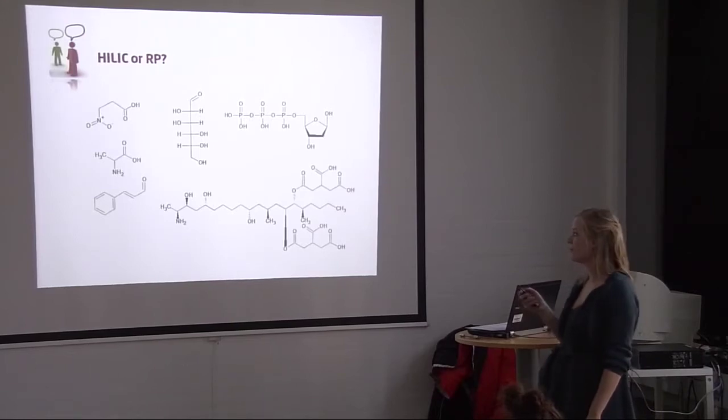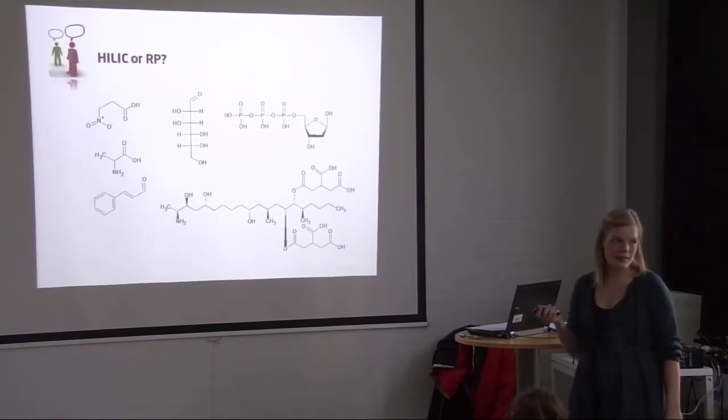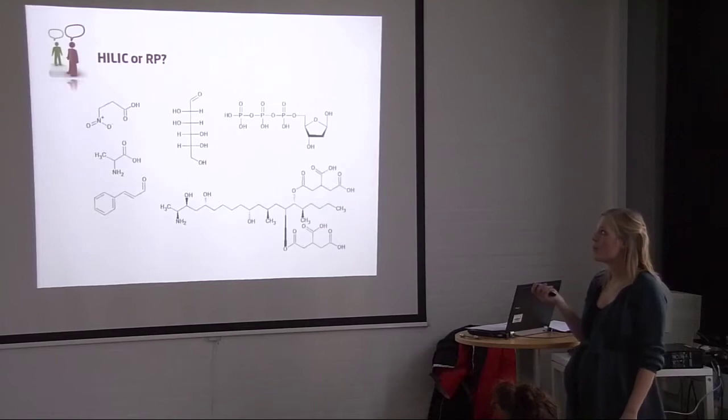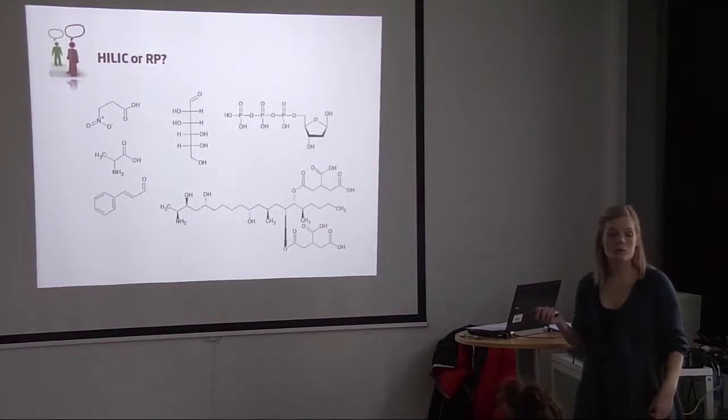These two compounds up here - we got a nitrate group which makes this small molecule extremely polar. Also here we got an amino acid which will probably be a zwitterion at pH 7.